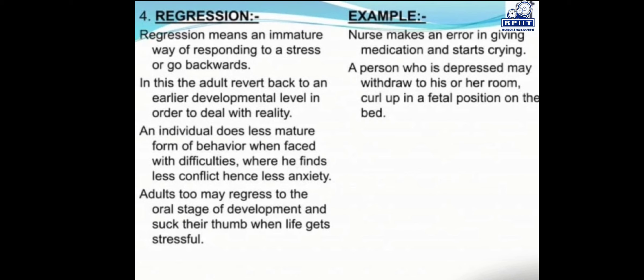Adults may regress to the oral stage of development and suck their thumb when life gets stressful. Examples of regression include: a nurse who makes an error in giving medication and starts crying, and a person who is depressed may withdraw to their room and curl up in a fetal position on the bed. These are examples of regression. Thank you so much for watching the video.